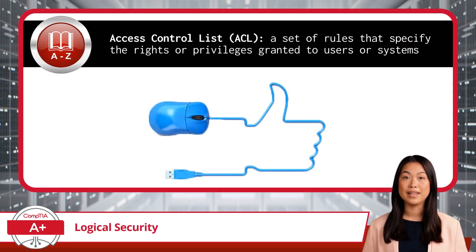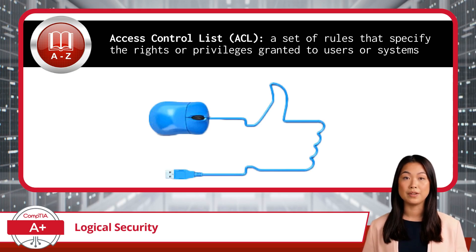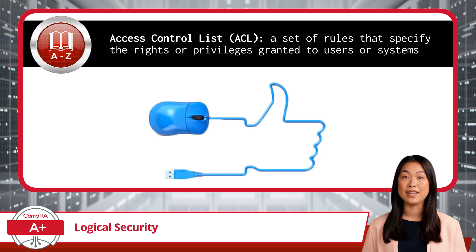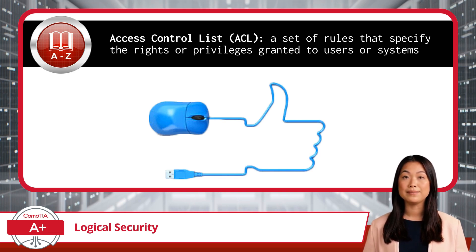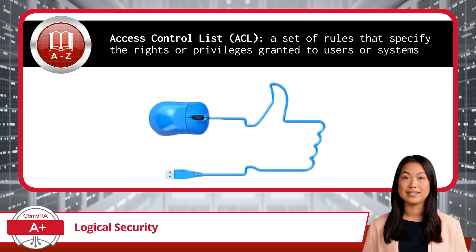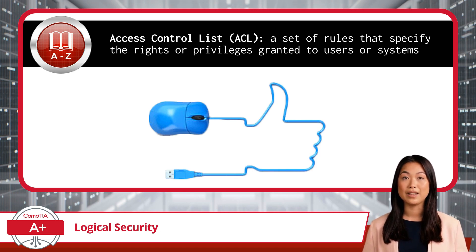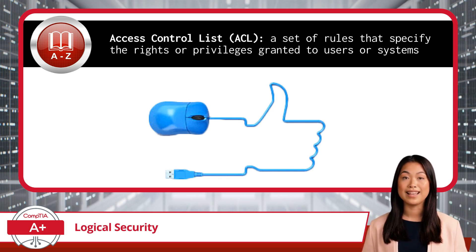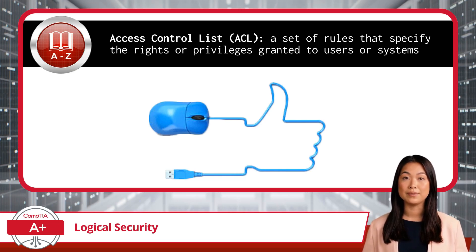Building upon least privilege, we have access control lists, or ACLs for short. An ACL is a critical tool used for enforcing security policies within an organization — essentially a set of rules that specify the rights or privileges granted to users or systems. This includes an access list to objects such as files, directories, or network resources, along with details as to what operations can be performed on those objects. For instance, an ACL for an NTFS file system might allow a user to read a document but not modify or delete it. ACLs are highly customizable, allowing administrators to specify permissions at a granular level, ensuring that only authorized users can access sensitive data.